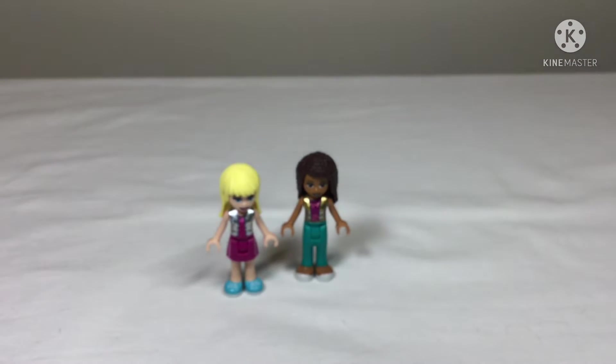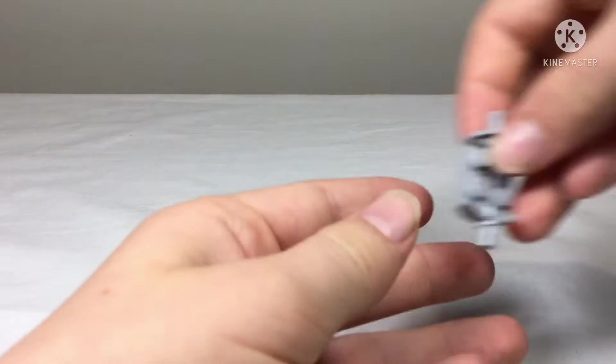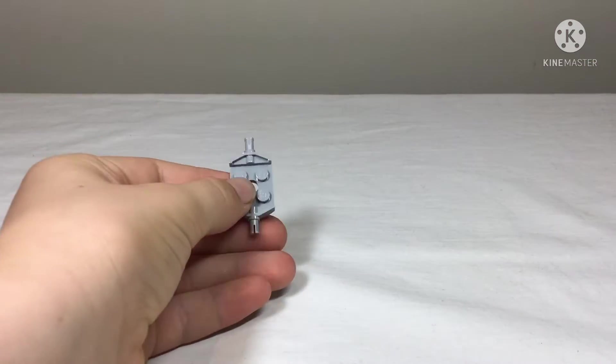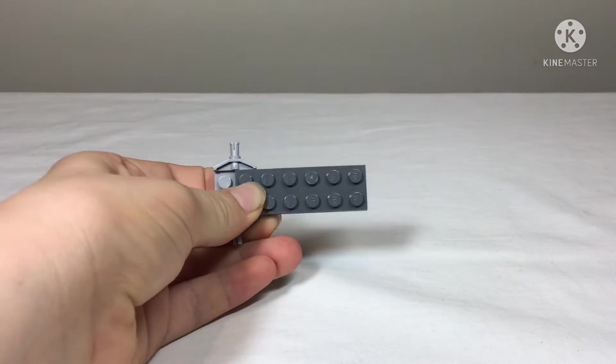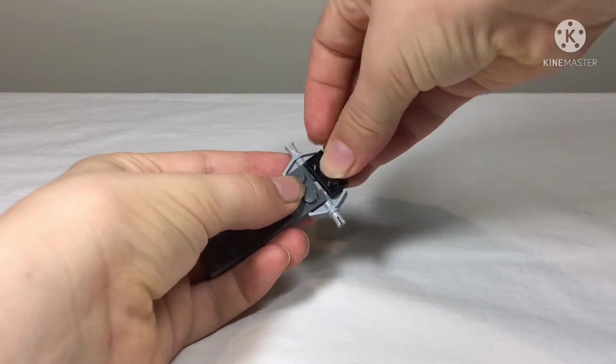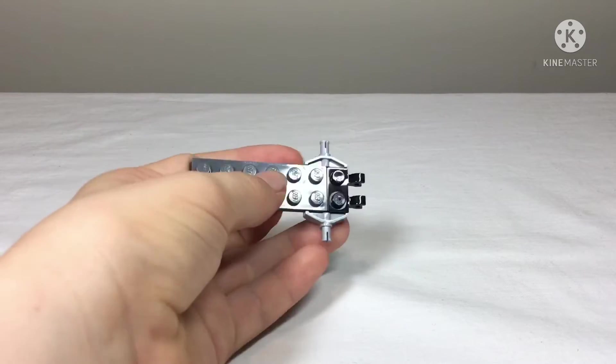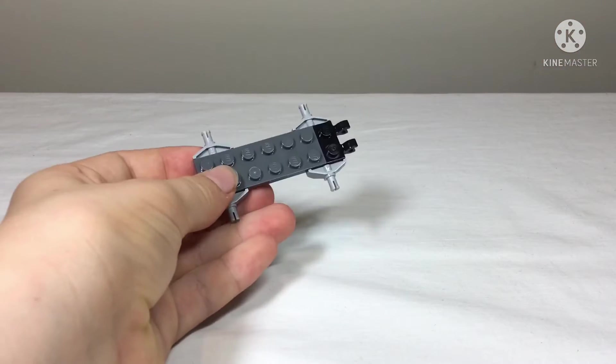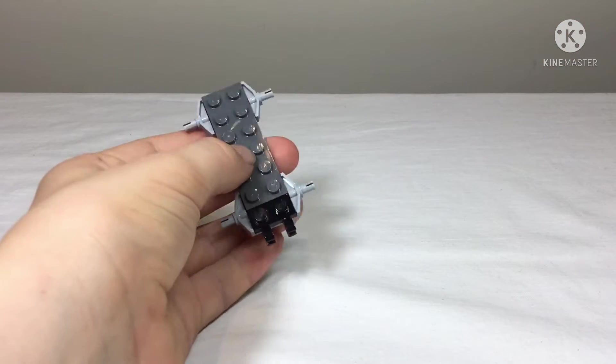Now we get to start with the rescue buggy, which is in the actual name of the set. It has two pairs of wheels. This is just the base so far, so we put on some axles to stick the wheels on.